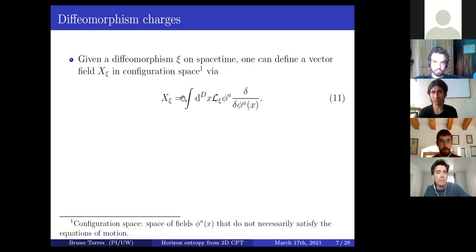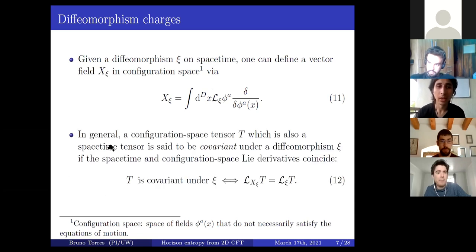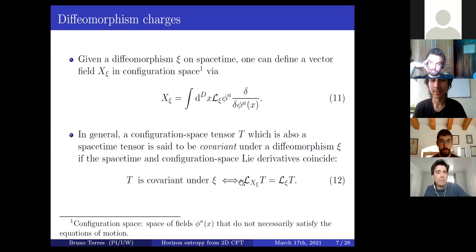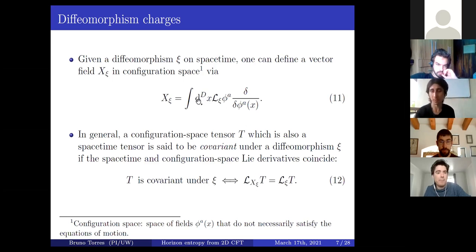Once we have this structure, we can define the notion of a vector field on configuration space — the space of fields treated as dynamical — that don't necessarily have to satisfy the equations of motion, which is why I call it configuration space and not phase space. An important notion is tensors which are covariant under diffeomorphisms, meaning precisely that the Lie derivative on spacetime coincides with the Lie derivative on phase space. This is a non-trivial requirement, particularly for theories with background structures.